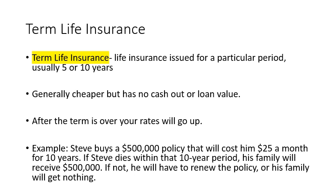If he doesn't renew and he passes away outside of that ten-year window, the family gets nothing, because he didn't die during that window. The money you paid only insures you for those years — outside of that, you need to renew or you're no longer insured. So straight life insurance has benefits you pay for, while term life insurance is cheaper but has fewer features.